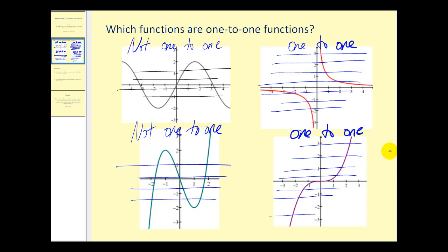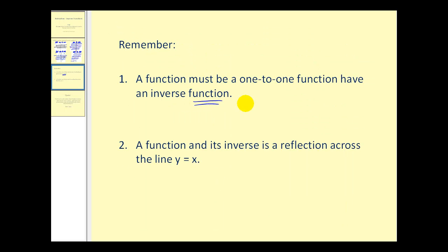Remember, what that means is these two functions have inverse functions and these two do not. A couple of things we must remember: a function must be one-to-one to have an inverse function, and a function and its inverse is a reflection across the line y equals x.